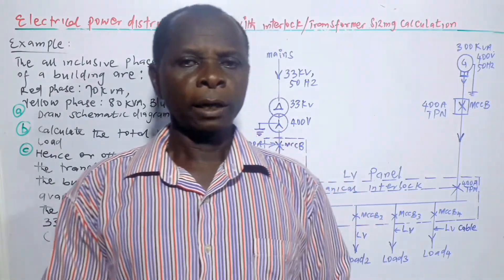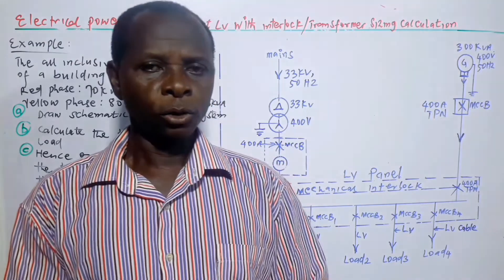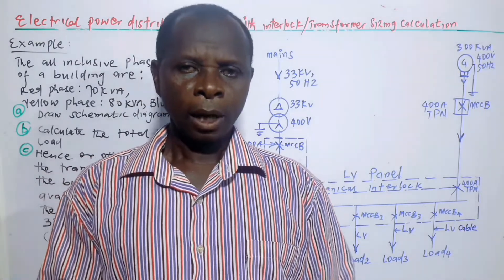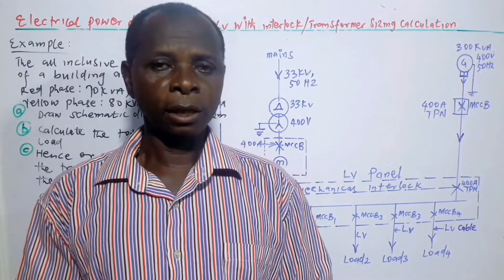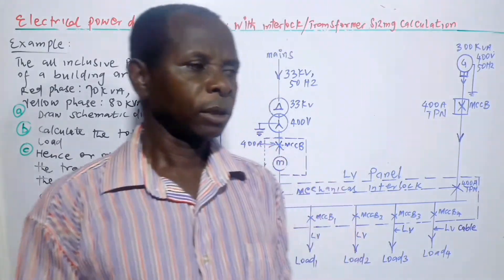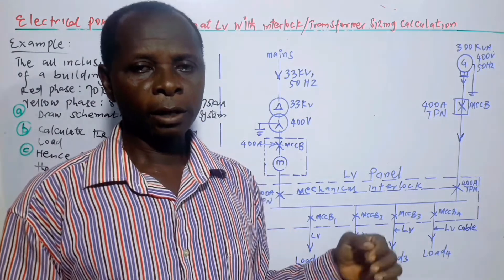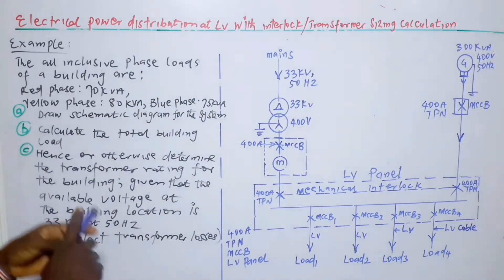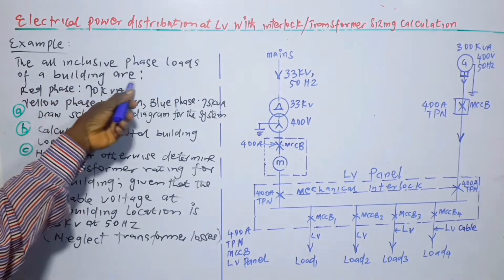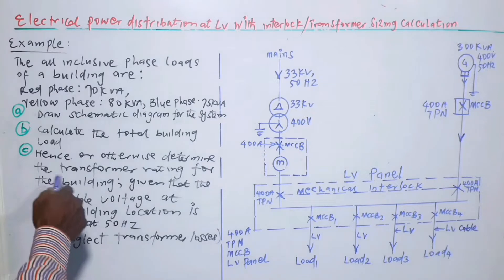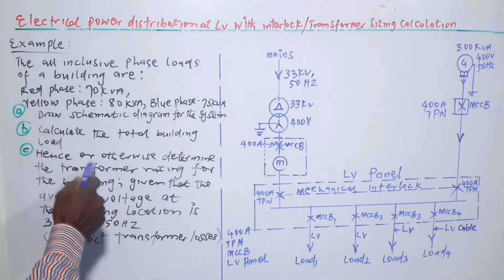For the purpose of a thorough understanding of the concept of a power distribution system at low voltage and transformer sizing calculation, the concept is illustrated making use of an example as follows. The all-inclusive phase loads of a building are: red phase 70 kVA, yellow phase 80 kVA, blue phase 75 kVA.